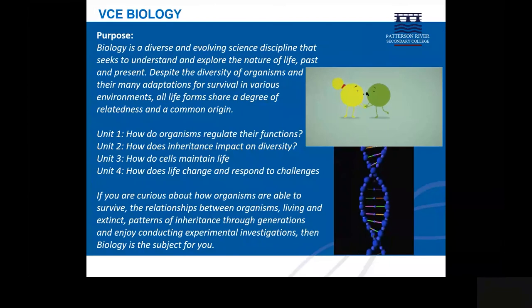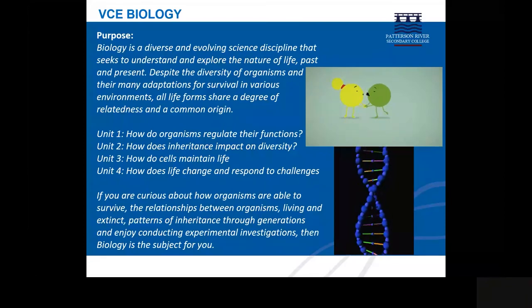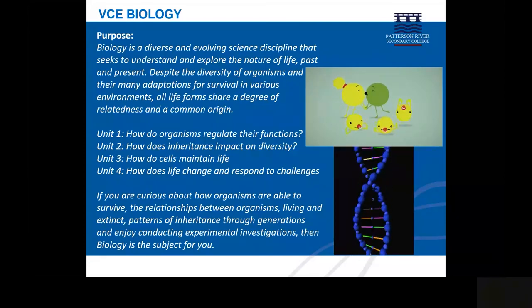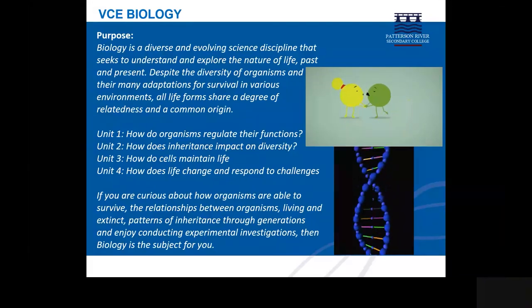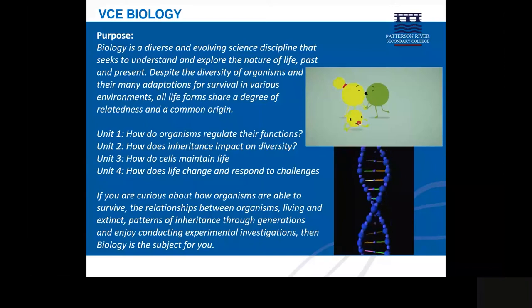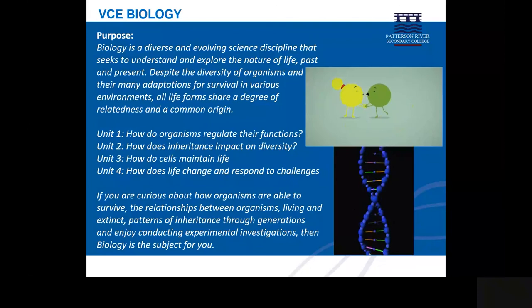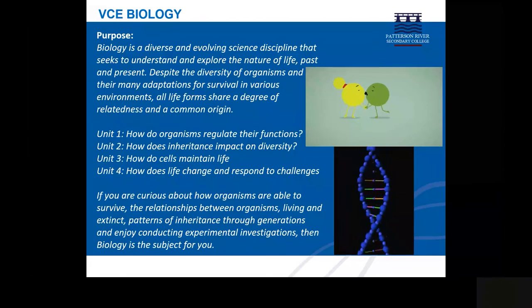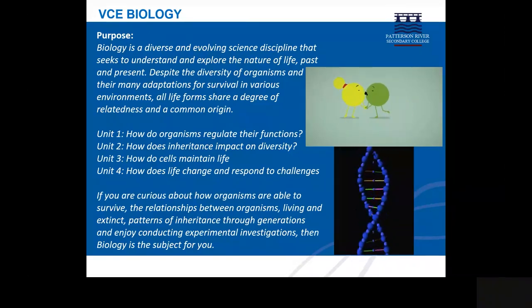In Unit 2, students explore reproduction and the transmission of traits from generation to generation. They learn about the process of meiosis, explain the inheritance of characteristics, analyse patterns of inheritance, interpret pedigree charts and predict the outcomes of genetic crosses. Students analyse the advantages of asexual and sexual reproductive strategies and study the different types of adaptations that enhance an organism's survival. They explore the interdependences between species in maintaining ecosystems and consider the contributions of Aboriginal and Torres Strait Islander knowledge and perspectives in understanding the survival of organisms in Australian ecosystems.